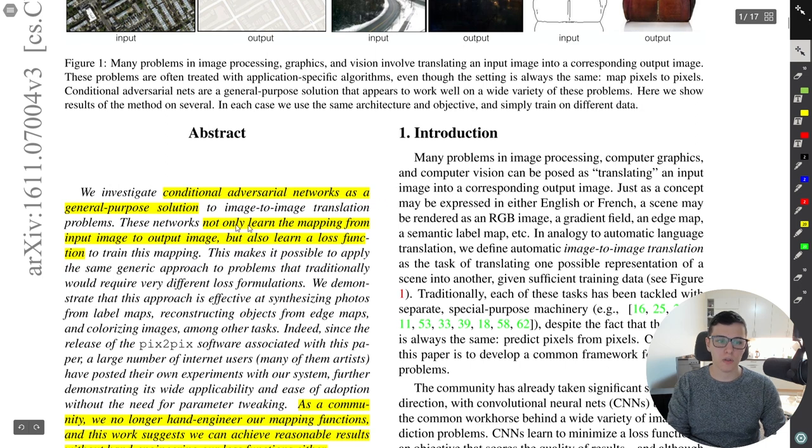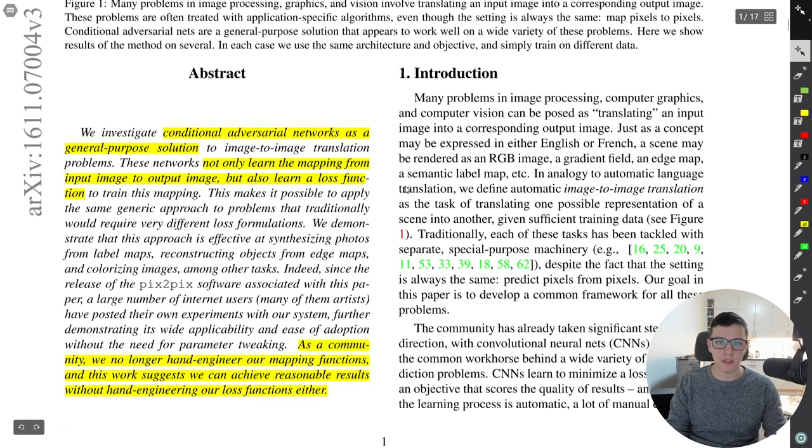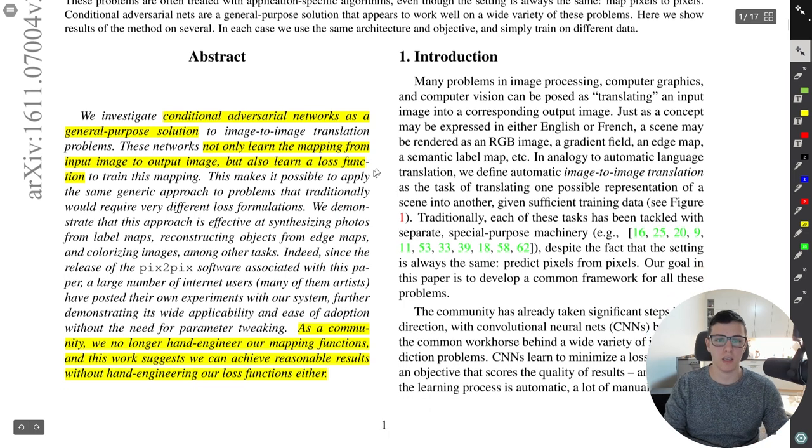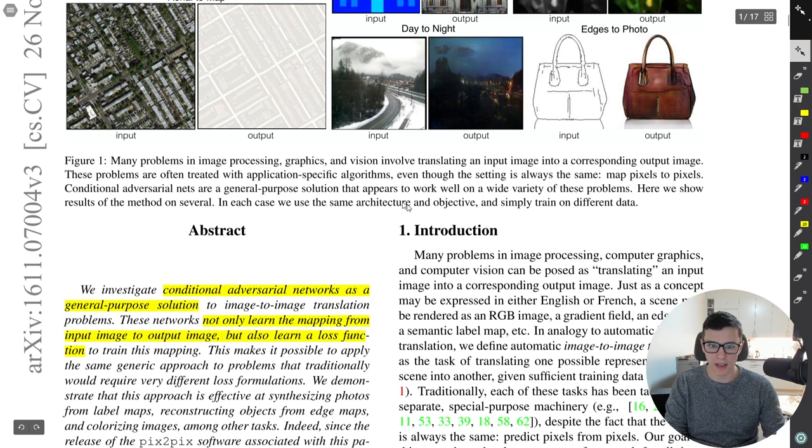So the idea is that we don't just learn the mapping, which we would if you just use a convnet, but we also learn a loss function. And so that could be a bit confusing as to, you know, when I read it first, I was like, oh, what is the loss function? But the loss function is the GAN itself, right? The discriminator is inherently learning a loss function instead of using some specific one.